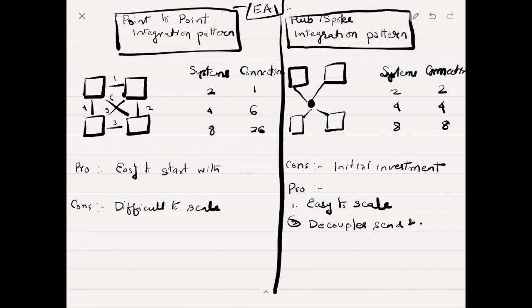Hub-and-spoke integration systems are easy to scale. It also decouples the receiver from the sender, so we can change a system which is sending a message and another system which is receiving a message.